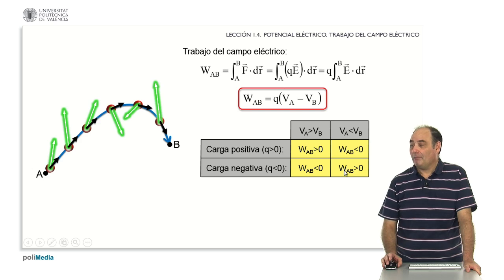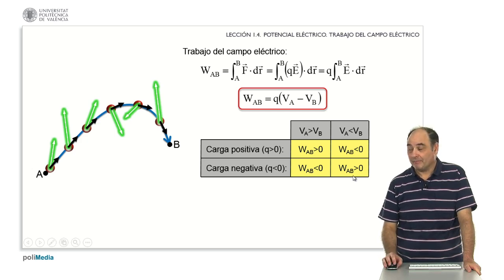In this way, we can already foresee for each type of load and each type of movement, if we go in the direction of increasing or decreasing potentials, if the work is positive or negative. Since the systems subjected to a single force tend to evolve in the sense in which the work is positive, it means that the positive charges, their natural tendency, is to move in the sense in which the potential decreases. The opposite happens with the negative ones, which tend to move in the direction of increasing potentials.